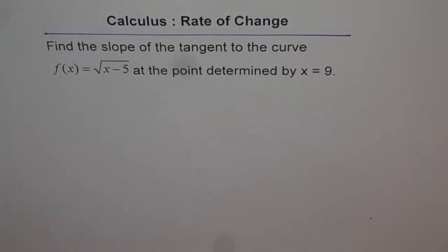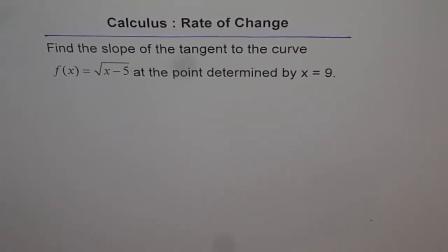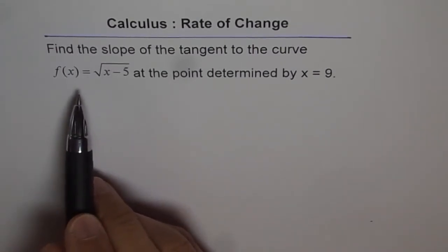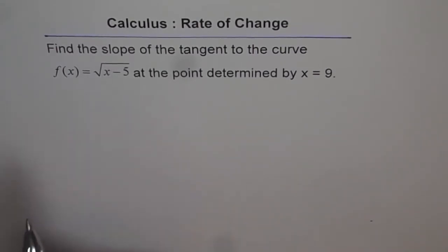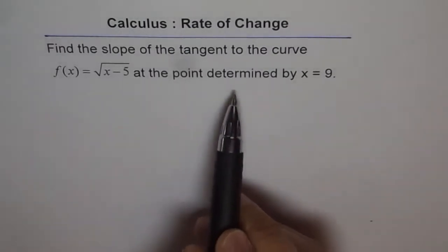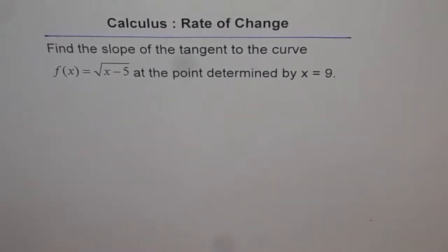Calculus, rate of change. Find the slope of the tangent to the curve f(x) = √(x − 5) at the point determined by x = 9.